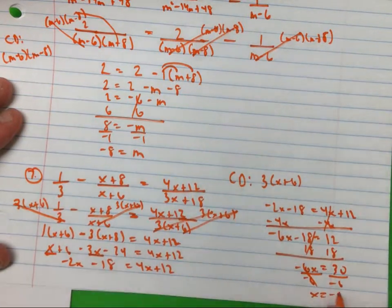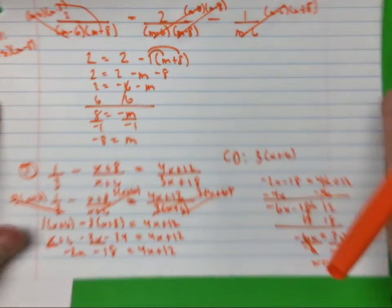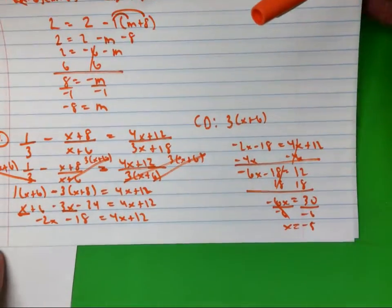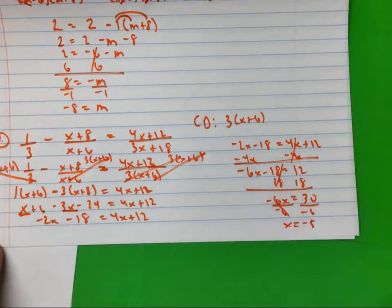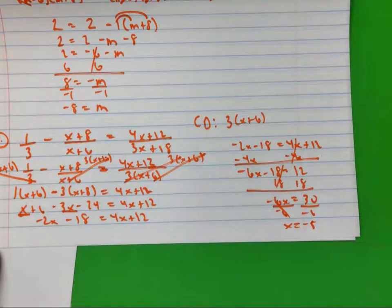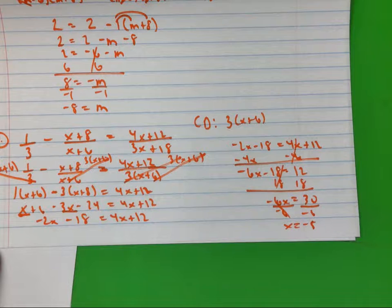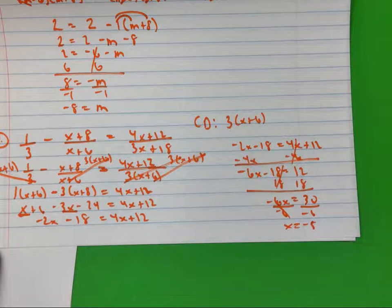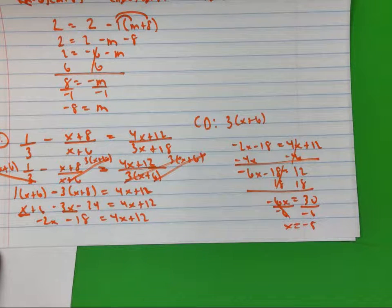Solving for x gives x equals negative five.